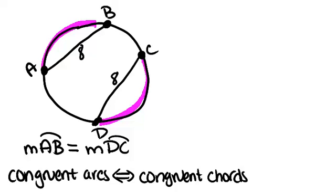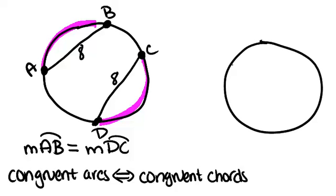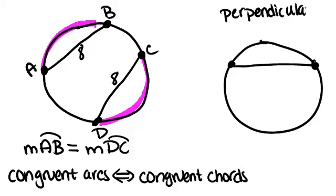A second property about chords is if you have a circle with one chord in it, and you want to figure out the perpendicular bisector of that chord. Remember, a perpendicular bisector is a line that bisects another line, so it cuts it in half, and meets it at a right angle, so that's why they're perpendicular.